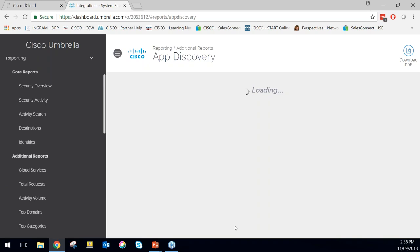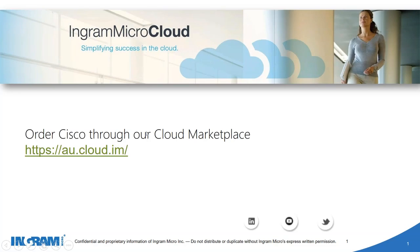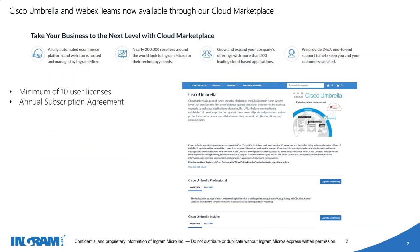I'll get Maria on now to quickly run through what we have at Ingram Micro in terms of promos. Hi everyone, my name's Maria. I'm the vendor manager in our cloud business. We've just announced Cisco Umbrella onto our cloud marketplace, which is a really exciting launch for us. You can now order it through our marketplace under an annual subscription for both Professional and Insights. To get access to it, just follow the link provided on the screen directly to our cloud marketplace.